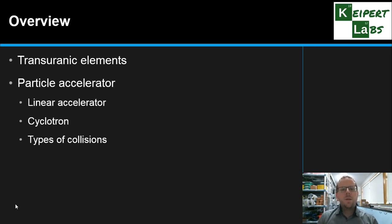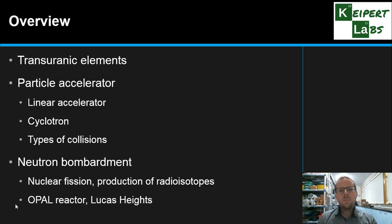We're then going to look at some of the technology that's involved in producing radioisotopes called particle accelerators, the different types of particle accelerators, linear accelerators and cyclotrons. And also the types of collisions that we might be undergoing in a particle accelerator, and then looking at the process called neutron bombardment that we can use to produce radioisotopes. Either looking at nuclear fission or particular radioisotopes being made, as well as looking at one such facility here in Australia called the Opal Reactor in Lucas Heights in Sydney.